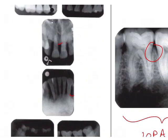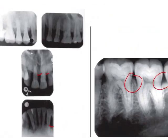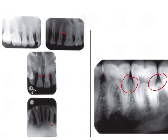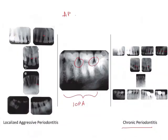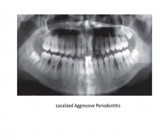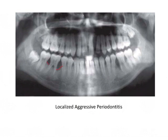This arc-shaped bone loss is wider as compared to that in chronic periodontitis. So aggressive periodontitis will have wider bone loss than chronic periodontitis. The correct answer is wider bone loss. As you can see, these arc-shaped defects are all wider.